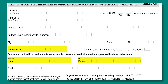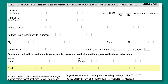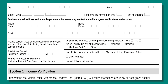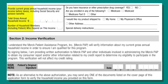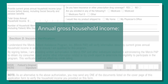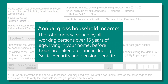We can send text messages to your cell phone to keep you informed about your enrollment and prescriptions, with the option to opt out at any time. If you would like us to notify you when we receive your enrollment form, write in your email address. The next part of Section 1 asks for information about your annual gross household income, which is the total money earned by all working persons over 15 years of age living in your home.